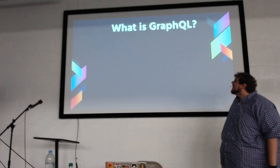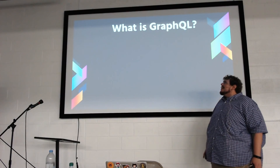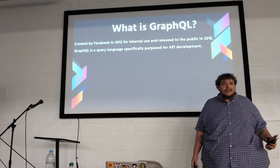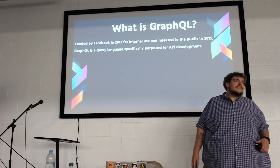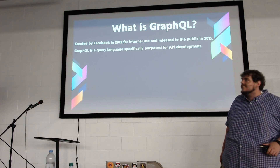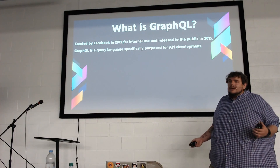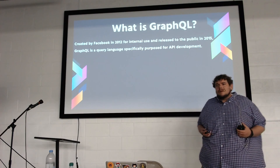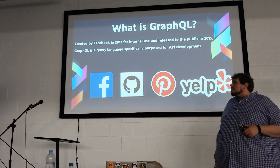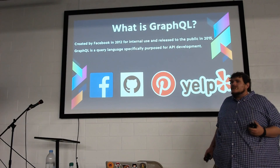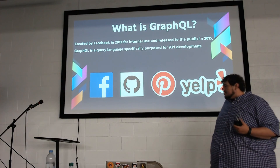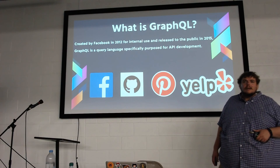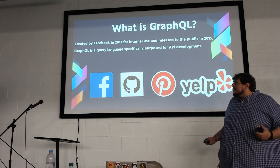Let's go into GraphQL. So what is GraphQL? It was created by Facebook in 2012 for internal use — you can imagine the sort of data problems a company like Facebook has. It's a query language specifically focused on API development. It's used by some pretty big players: obviously Facebook, but also GitHub, Pinterest, Yelp, and a bunch of others.